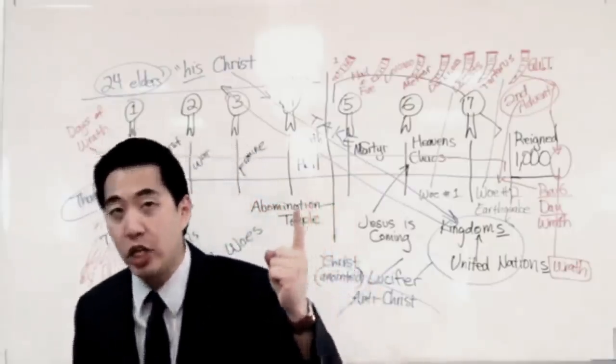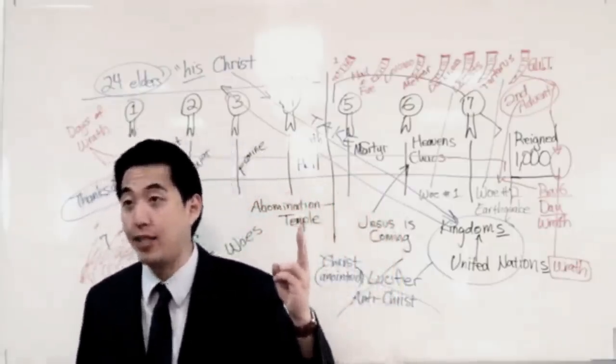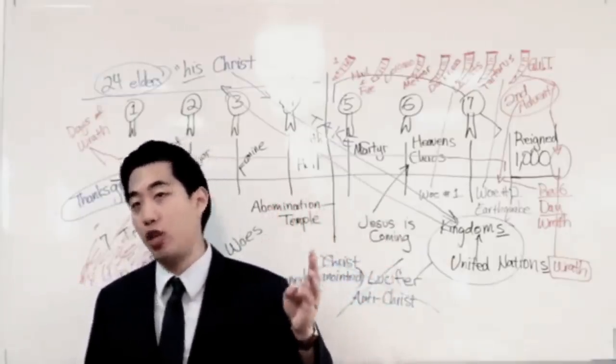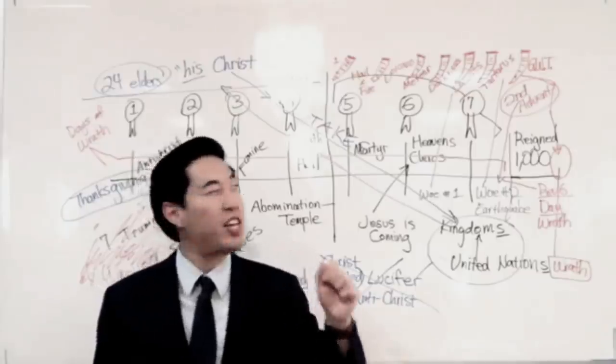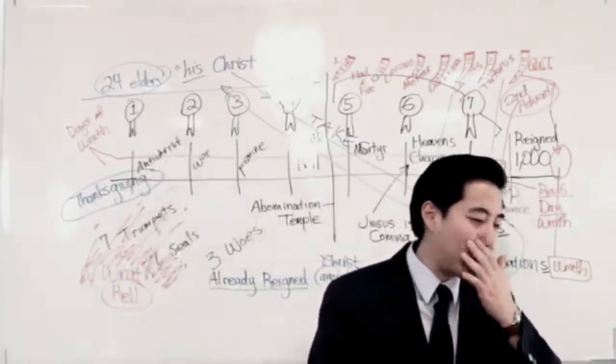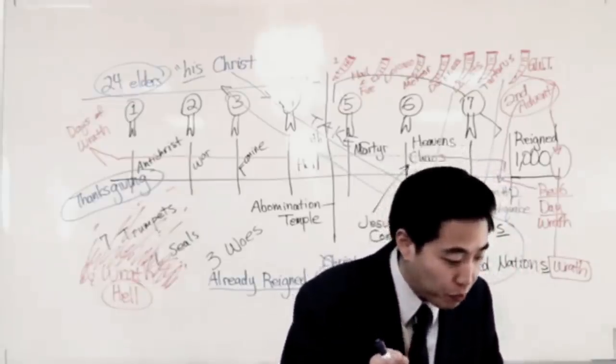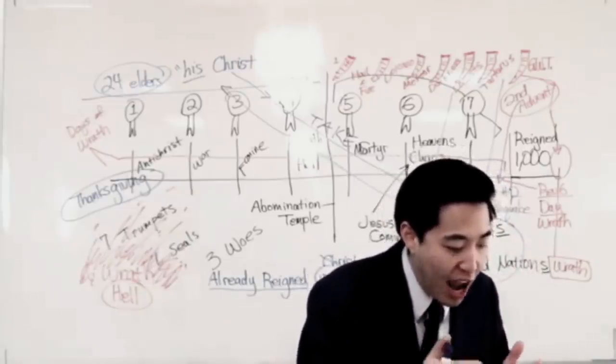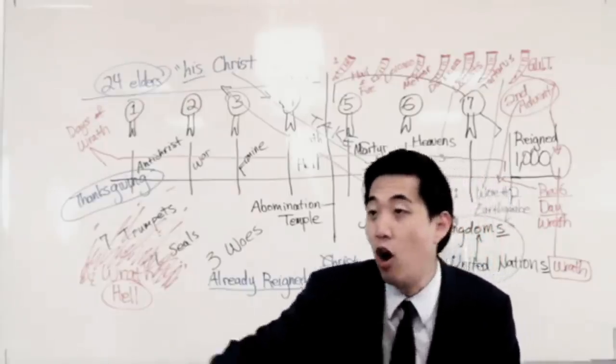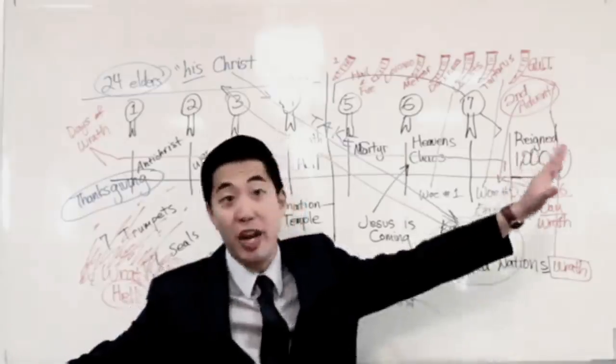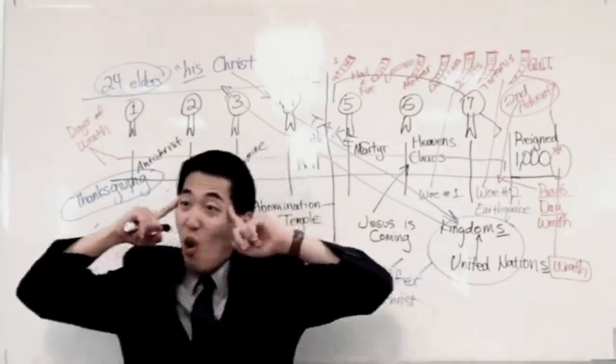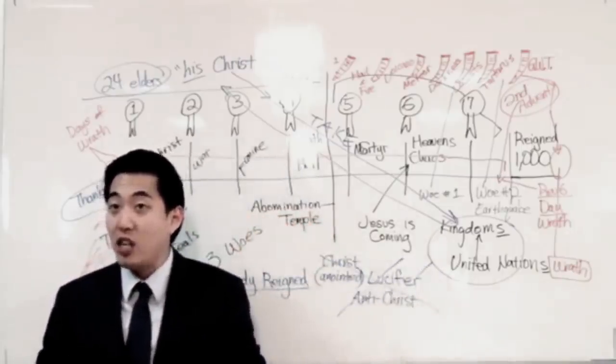There's a judgment of nations, there's a judgment seat of Christ, and there's a great white throne judgment. In this great white throne judgment, a lot of people are wondering this: Why is there a book of life at Revelation 20 verse 12? Because aren't all these people lost? Aren't all their names not in the book of life anyways?